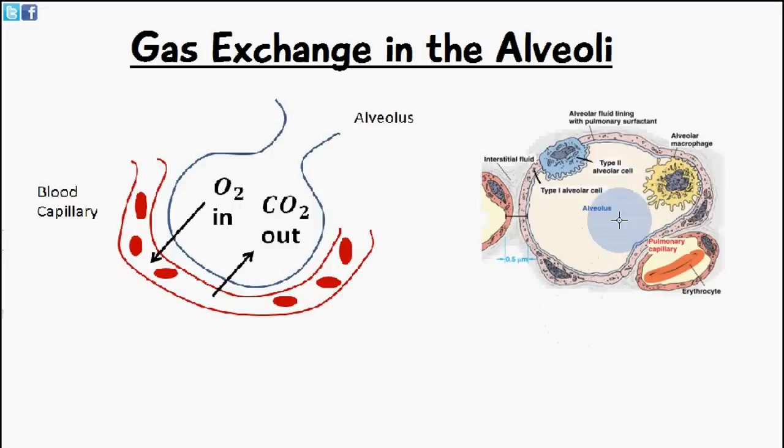When we have this high oxygen content - because the air contains a high concentration of oxygen and the blood in the capillary contains a low oxygen content - the oxygen is going to move from a high concentration in this region here to a low concentration here.